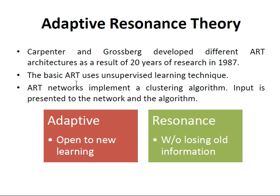To understand Adaptive Resonance Theory further, we split the terms: Adaptive and Resonance. Adaptive means open to new learning — anything you want to learn is termed as adaptive. Resonance means without losing old information. If you are learning something with certain involvement, you will be able to recall it for a long period. So, without losing old information is termed as resonance, and learning a new thing is called adaptive.